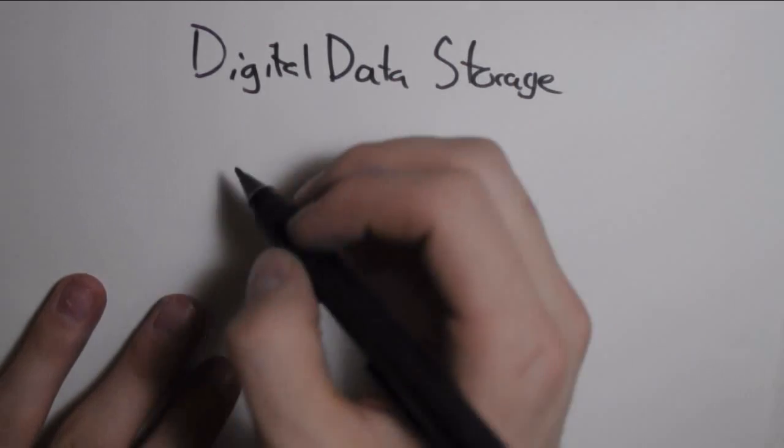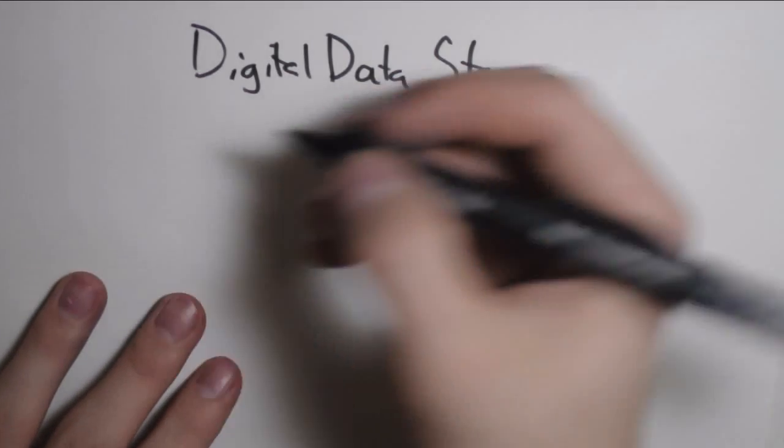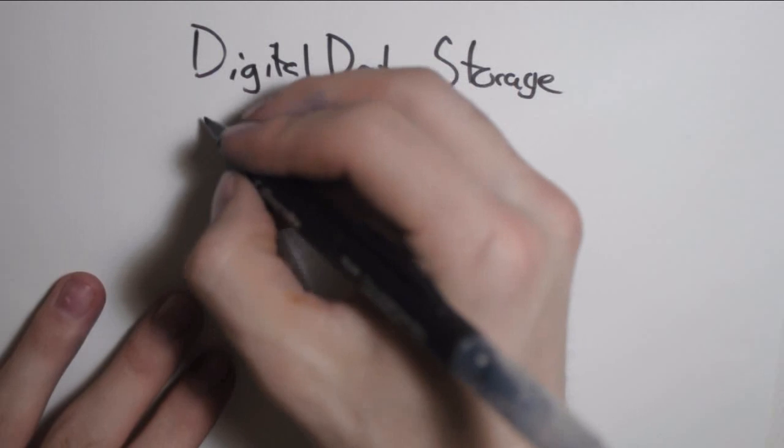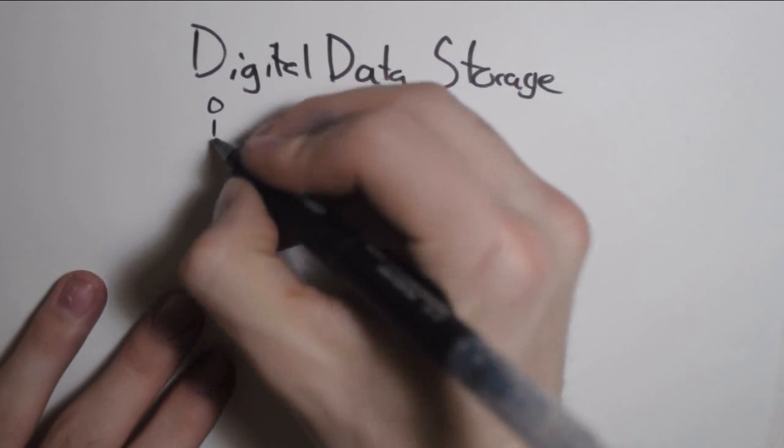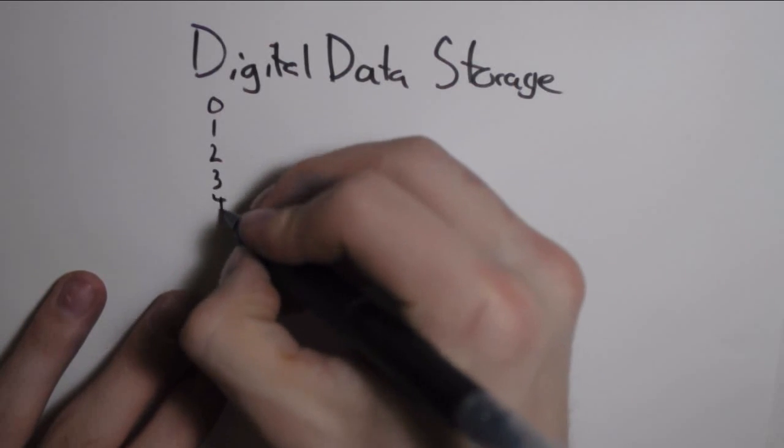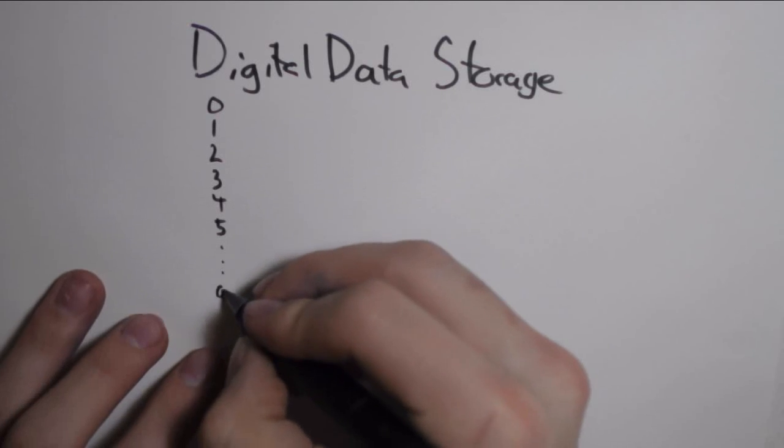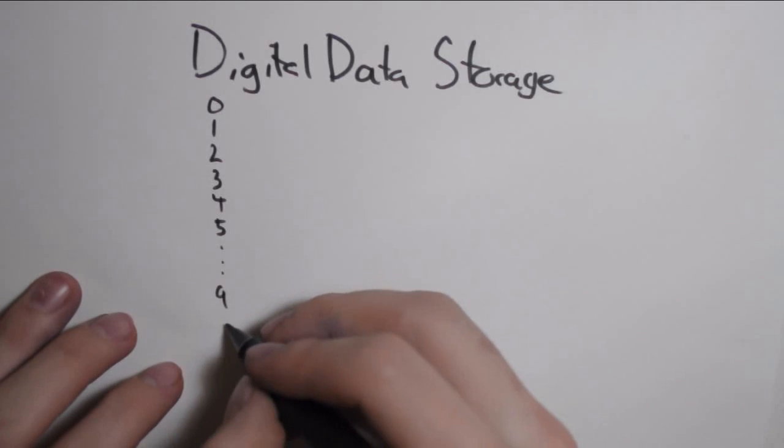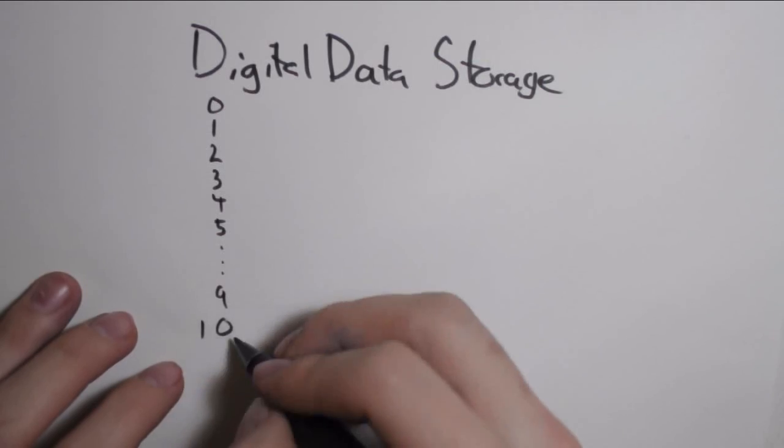Digital data is stored using binary, which is a counting system just like ours, which is decimal. Decimal goes from 0 to 9, and then when you get to 9, you switch over and you drop back down to 0 and put a 1 in the tens place.